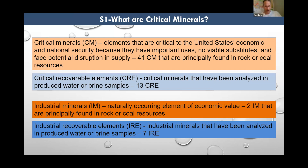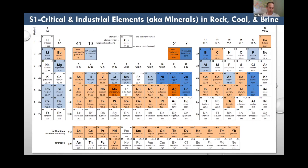Industrial minerals are naturally occurring elements of economic value — they're not on the critical minerals list, like iodine for example — and we normally already have domestic supplies of these. Industrial recoverable elements are industrial minerals that have been analyzed in produced waters and for which we have data to start with, though there are a smaller number of those. I've highlighted the recoverable elements in blue on the periodic table since we are already able to extract them from water.